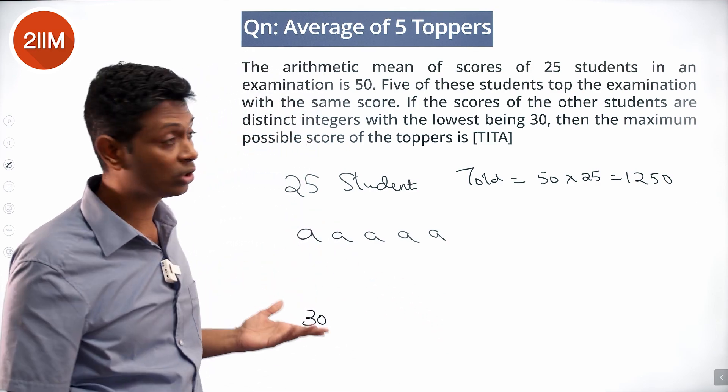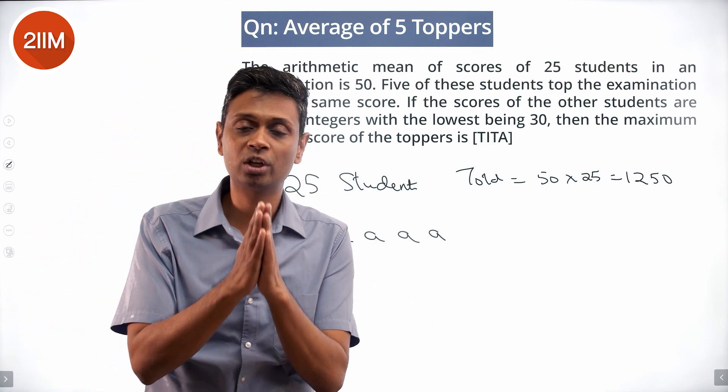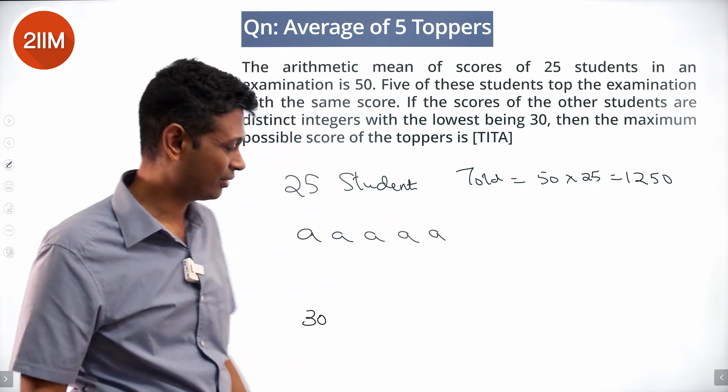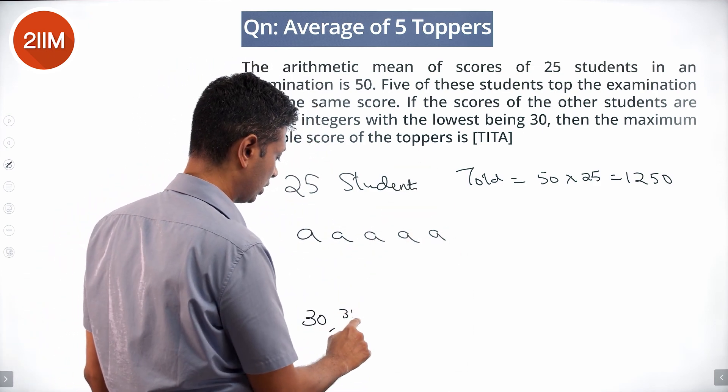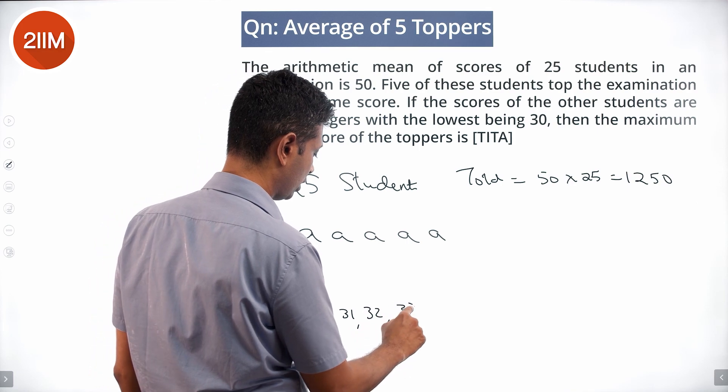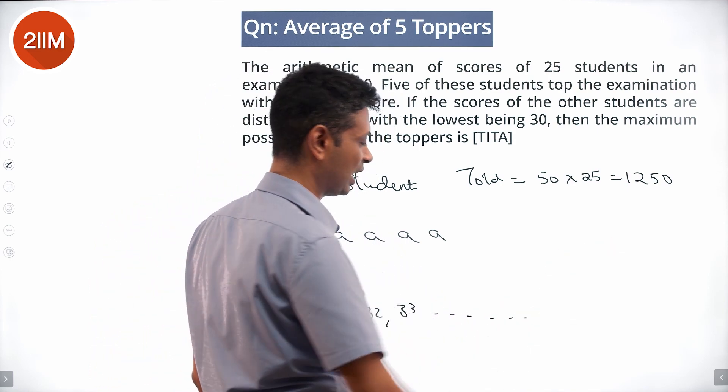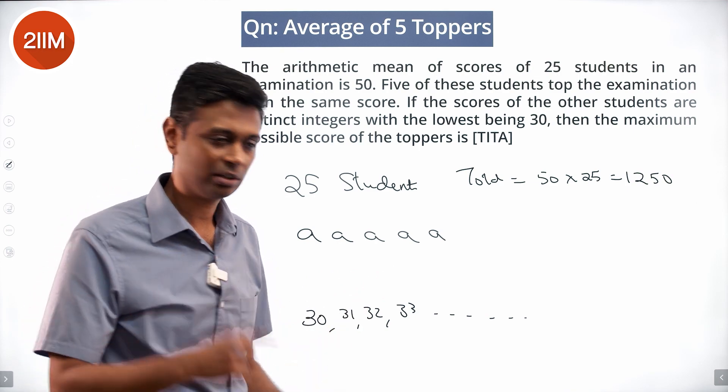The remaining 20 students should have as low a total as possible. They're distinct integers, so we're talking about 30, 31, 32, 33, all the way to whatever the last number is. So 30 to 50 will be 21 numbers, till 49.